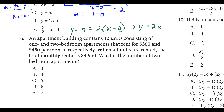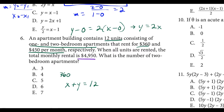Question six: an apartment building has 12 units with one- and two-bedroom apartments. One-bedrooms rent for $360 a month and two-bedrooms rent for $450 a month. When all units are rented, the total monthly rental is $4,950. We want the number of two-bedroom apartments. This is a system of equations: x plus y equals 12, and 360x plus 450y equals 4,950.